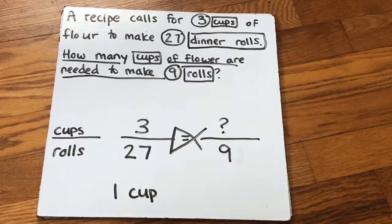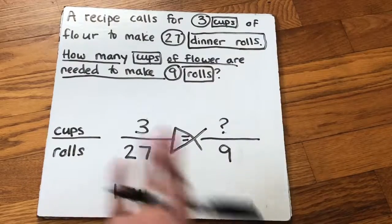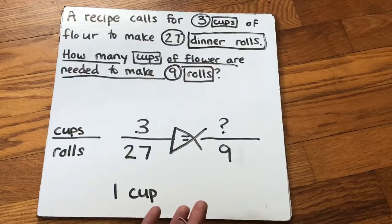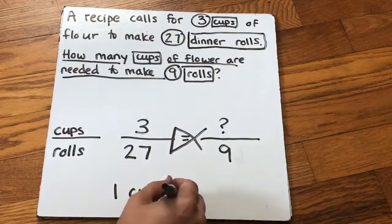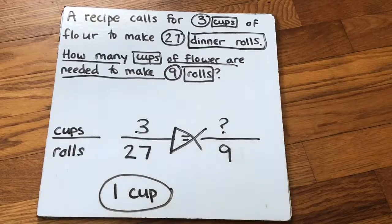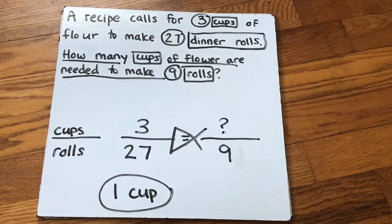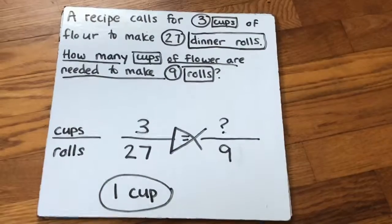This ended up being a unit rate because we found it for one — one cup — but they never asked us for the unit rate in the problem. So my final answer is one cup of flour is needed for nine rolls. You have notes on this in your notebook, along with some examples, including examples for shapes. Look back at your notebook if you need to know how to solve proportions in word problems.